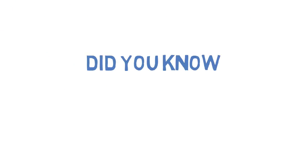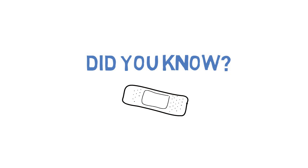Did you know that catheters have been around since 3000 BC and have been made out of many different types of materials over the years, including hollowed-out bamboo straws, rolled-up palm leaves, the hollow top of onions, as well as a variety of metals such as gold, silver, copper, brass, and lead. Now talk about some uncomfortable catheters!